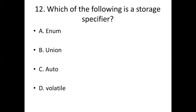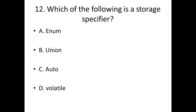Which of the following is a storage specifier? Option A: enum. Option B: union. Option C: auto. Option D: volatile. Answer: Option C, auto.